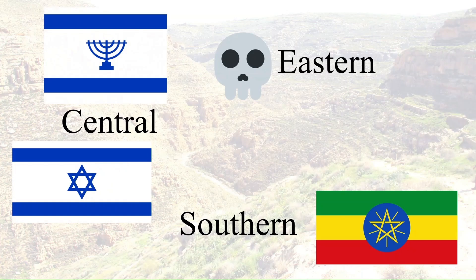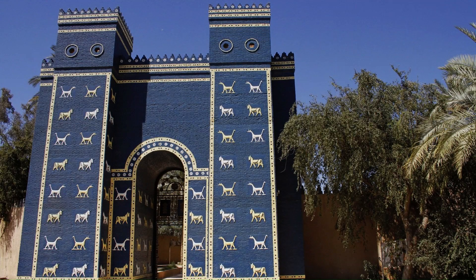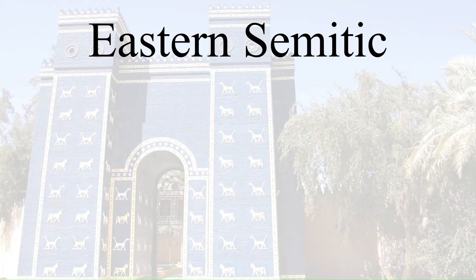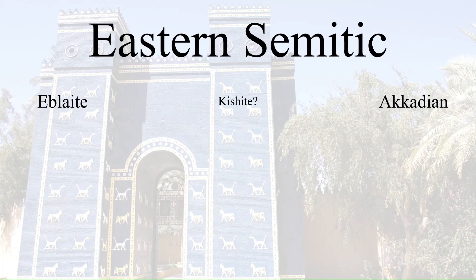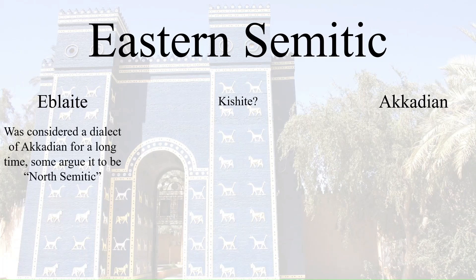First, let's look at the Eastern sub-branch. Two languages have been identified as Eastern Semitic: Akkadian, once the most spoken language across the largest empire in the world, now extinct, and Eblayat, also known as Paleo-Syrian. There is debatably a third language known as Kishite, but not much evidence has been uncovered yet to determine whether it was fully its own thing. Similarly, not a whole lot is known about Eblayat. Until fairly recently in linguistics, it was just considered a dialect of Akkadian, until the few texts which contain it suggested some features otherwise.